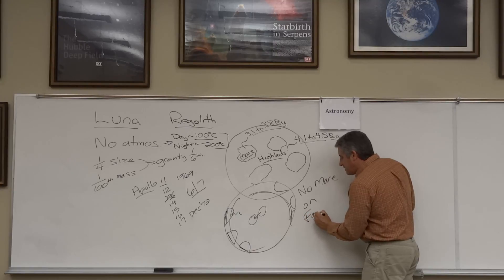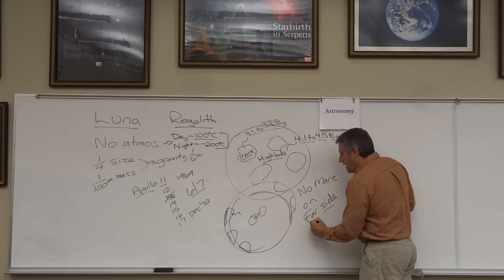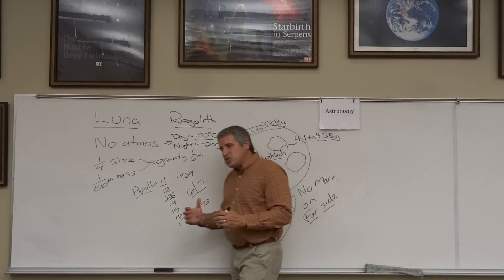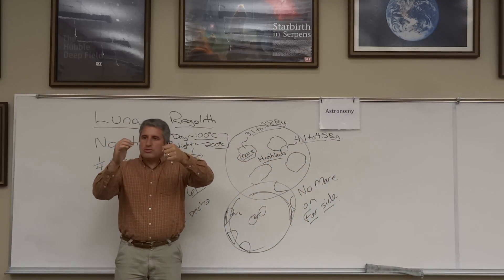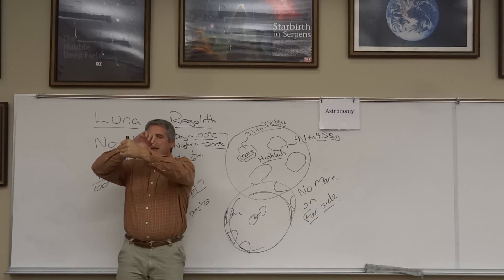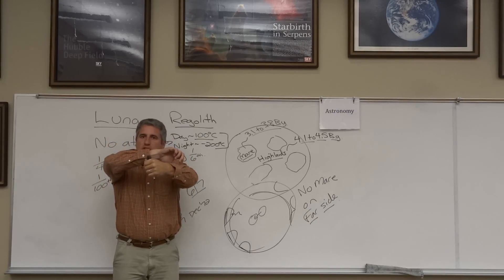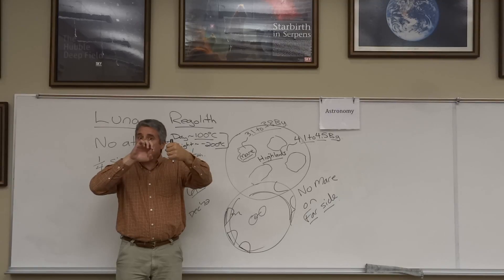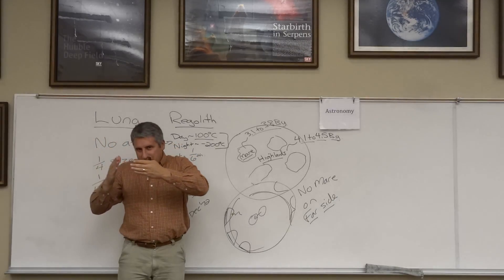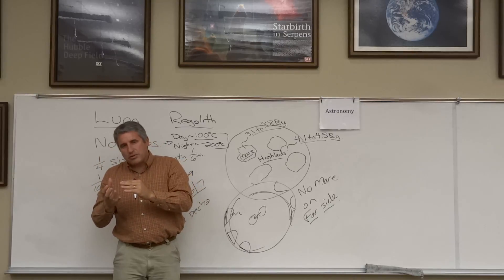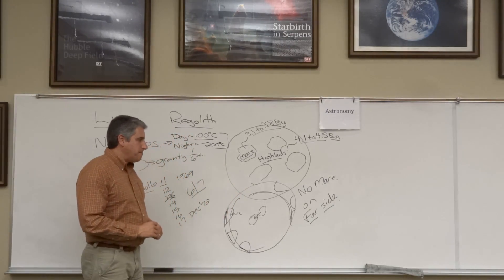We see virtually no mare on the so-called far side of the moon — the side that never faces the Earth. Because the moon is gravitationally bound to the Earth and keeps the same face toward us as it orbits, the core is offset toward Earth, thickening the far-side crust and creating a lack of mare on that side.